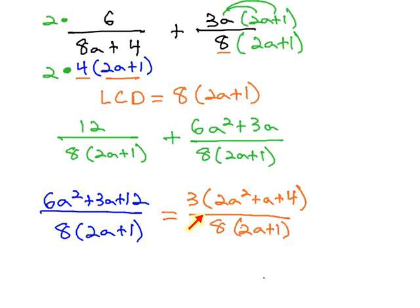Normally, we would want to factor the 2a squared, plus a, plus 4. However, a quick check of the possible factors shows us that that will not factor. It is prime. No reducing available. We'll call this our final solution.